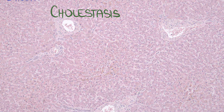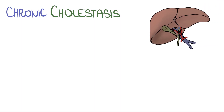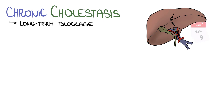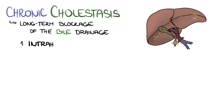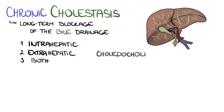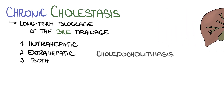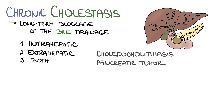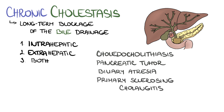On the other hand, chronic cholestasis usually develops as a result of long-term blockage of the bile drainage. The blockage may develop at the level of the intrahepatic biliary tree, extrahepatic biliary tree, or both. The most common causes of chronic cholestasis are choledocholithiasis, compression of the choledochal duct by a pancreatic tumor, or primary disorders of the biliary tree, such as biliary atresia, primary sclerosing cholangitis, or primary biliary cholangitis.